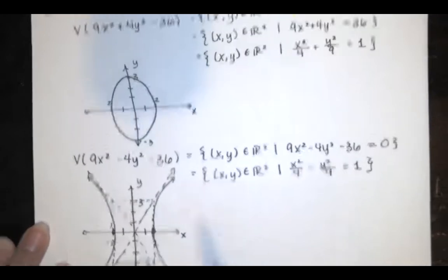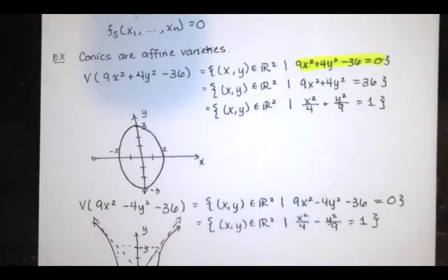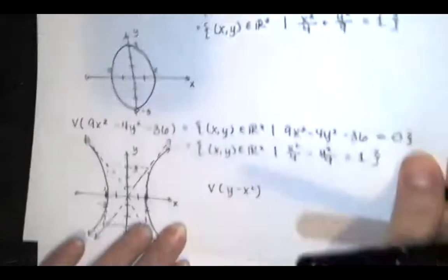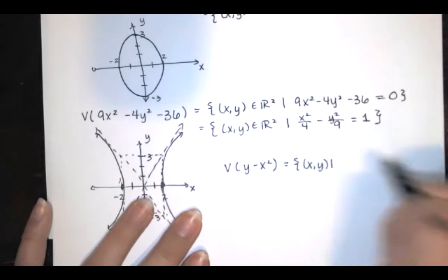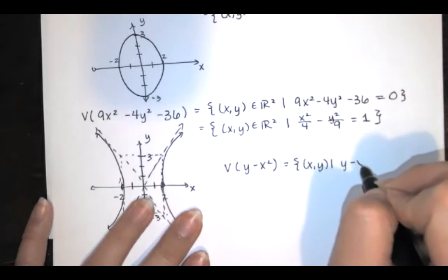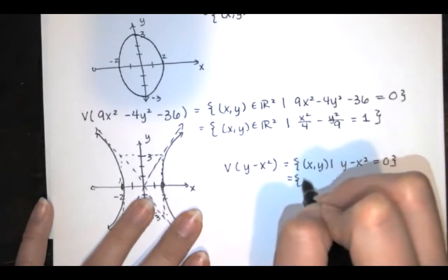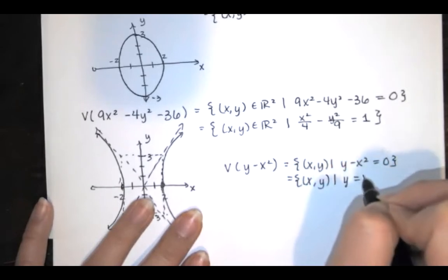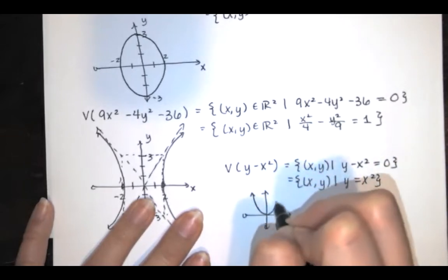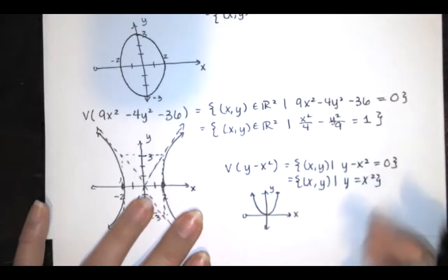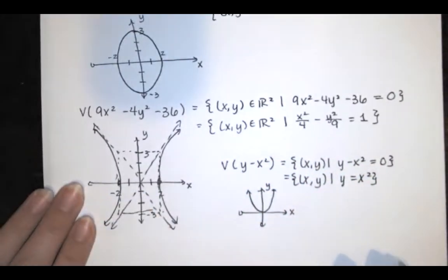Hyperbolas and ellipses are affine varieties, and a parabola obviously is too. The variety V of y minus x squared in two-dimensional space gives us our traditional parabola: rearranging y minus x squared equals 0 gives y equals x squared. All conic sections are affine varieties, and pretty much any polynomial defines an affine variety.